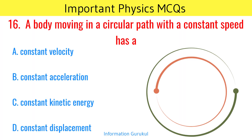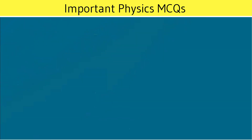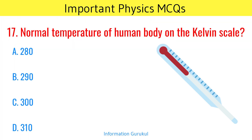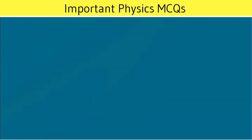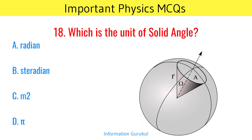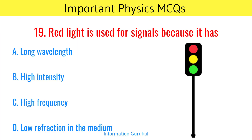A body moving in a circular path with a constant speed has a constant kinetic energy.